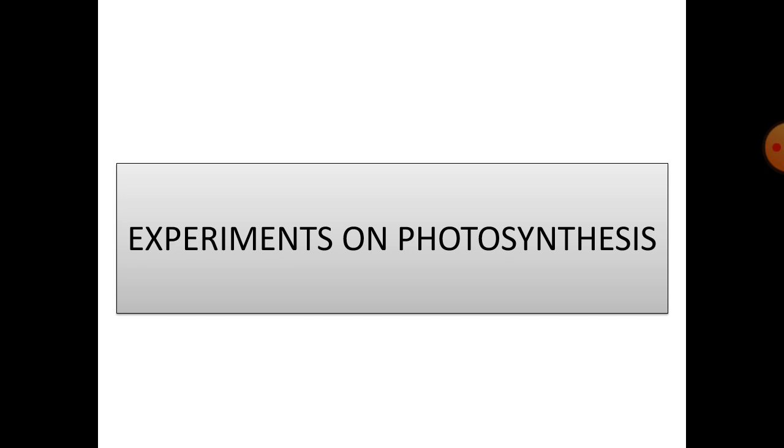The first term that comes here is de-starching. De-starching means removal of starch. How can we do this de-starching? For this, we will take a plant and the plant must be kept in dark for 24 to 48 hours. During this period, all the starch from the leaves will be removed. The storage organs and the leaves will not show the presence of starch. In this way, we can de-starch a leaf.